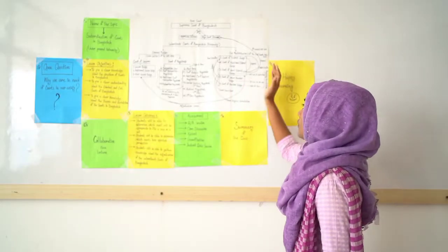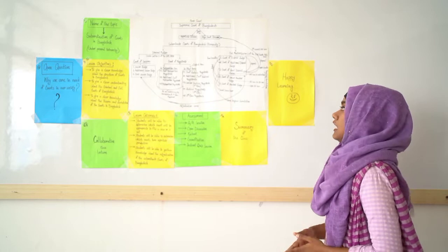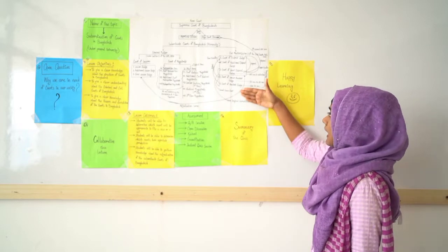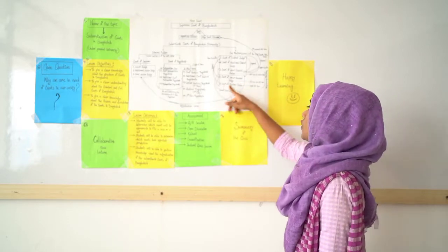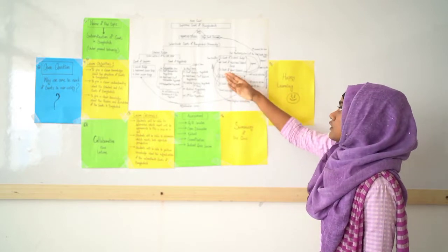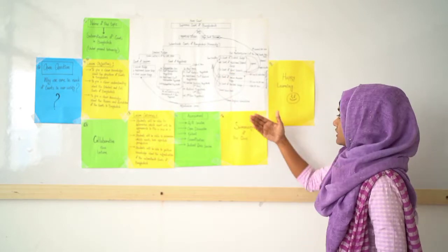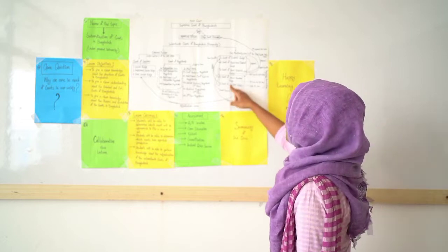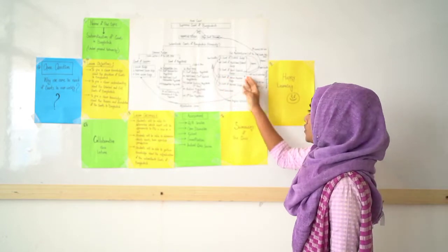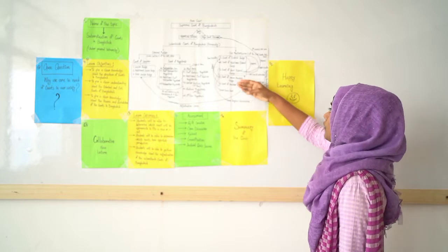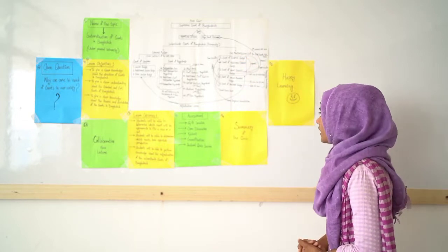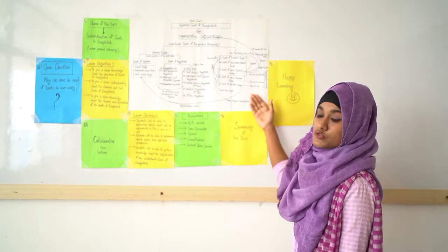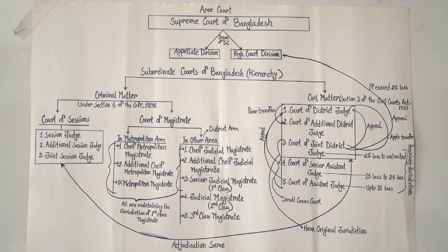If we want to file a suit for any civil matter, we must note that the Court of Assistant Judge, Court of Senior Assistant Judge, and Court of Joint District Judge have original jurisdiction. These three courts have original jurisdiction to file a suit. Appeals from the Assistant Judge and Senior Assistant Judge courts lie to the District Judge court. In the case of the Court of Assistant Judge, a suit can be filed where the value of the suit extends up to 15 lakhs.